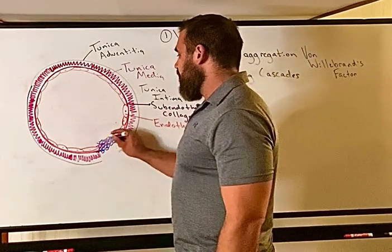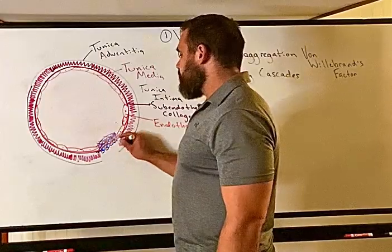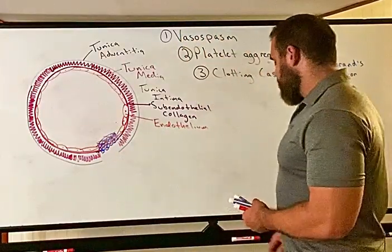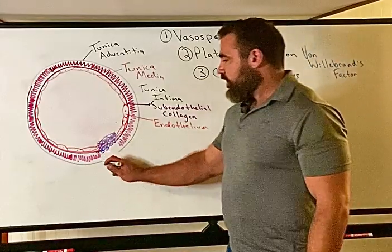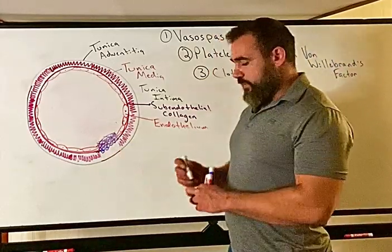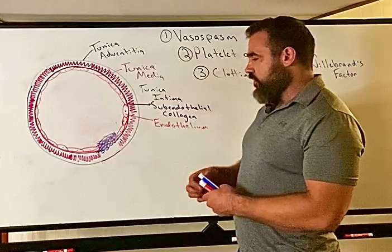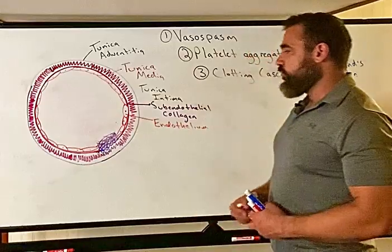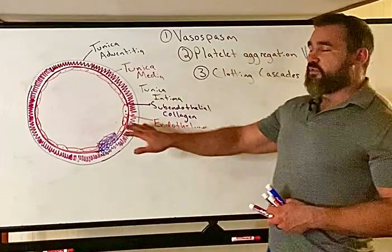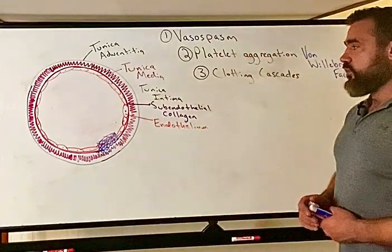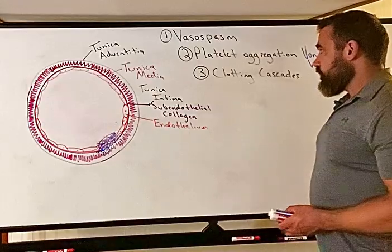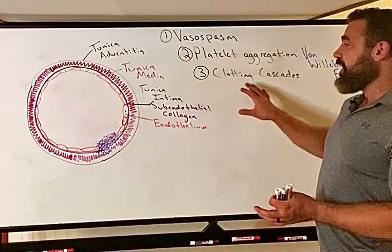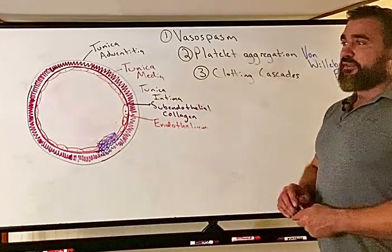The clotting cascade ends with fibrinogen converting to fibrin, forming a mesh-like patch of fibrin protein that actually patches the blood vessel. Once that happens, the vessel can heal with the help of growth factors — such as endothelial growth factor and vascular endothelial growth factor — driven by inflammation from tissue damage, eventually restoring a normal blood vessel wall.